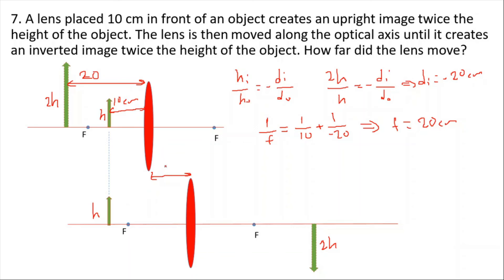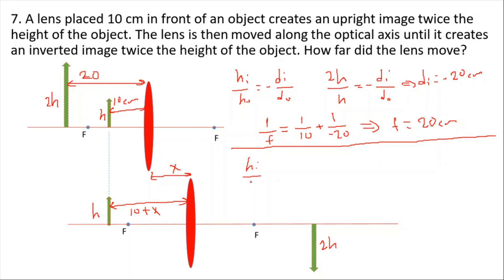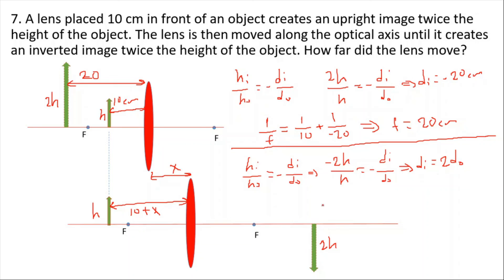In the second condition, the lens has moved a distance x, so the new object distance is 10 + x. Using magnification for the inverted image: -2h/h = -d_image / d_object, giving d_image = 2 × d_object. The image distance is twice the object distance.